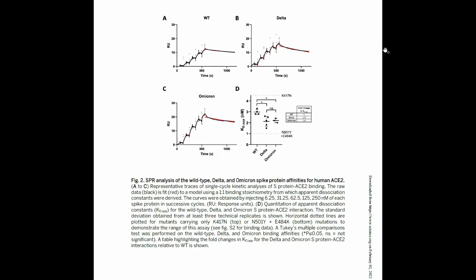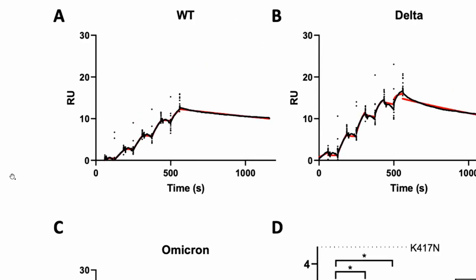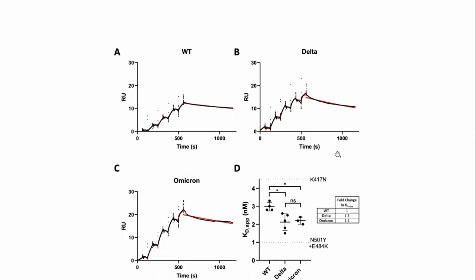Here's what the actual SPR data look like. In this case, they've immobilized the ACE2 receptor on the gold surface, and then they're injecting a little bit more and a little bit more of the spike protein and watching that angle change. Critically, once they've allowed that to bind, they try to wash it back off. By looking at the on rate and the off rate, they can calculate how strong that interaction is. Then they can compare the strength of that interaction between the original coronavirus, the Delta variant, and the Omicron variant across a bunch of different statistical analyses.